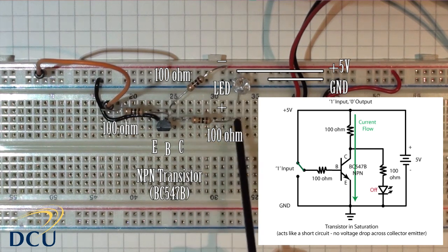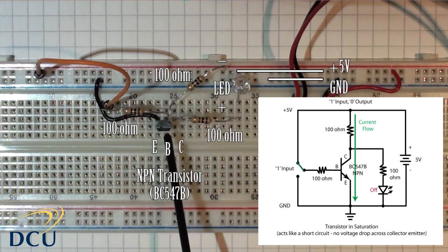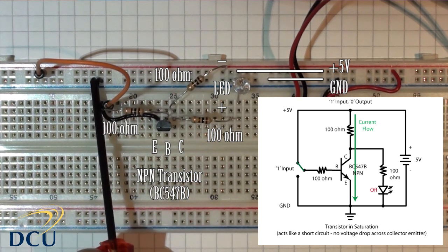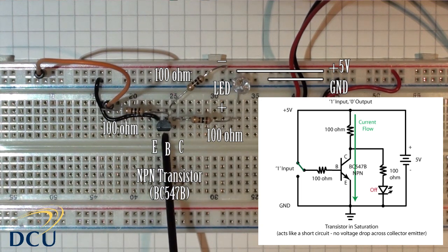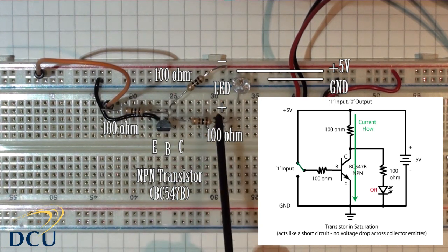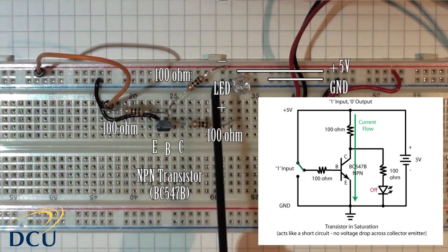We've given an alternative path from the collector to the emitter and to ground. Because the current flows through the transistor and not through the LED, we get an output of zero for an input of one.